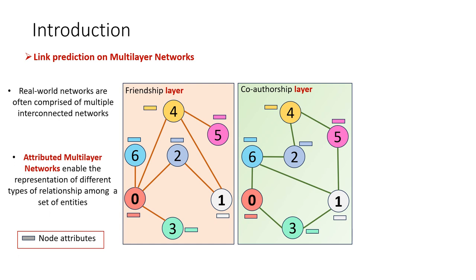The problem we aim to solve is link prediction on multilayer networks. The formalism of multilayer networks introduces the concept of layer for representing different types of relations among a set of entities, such as friendship or co-authorship relations.